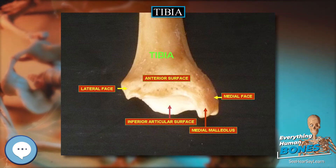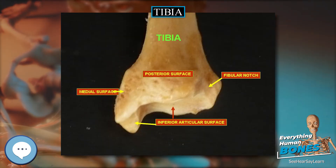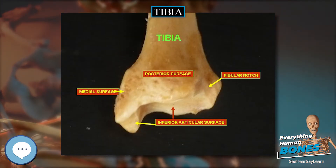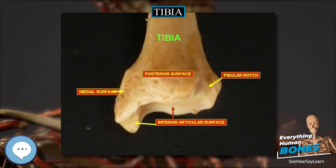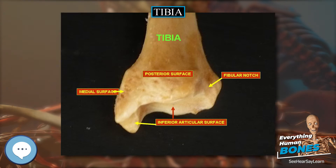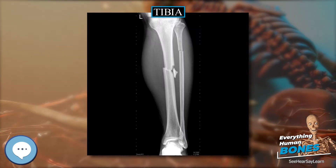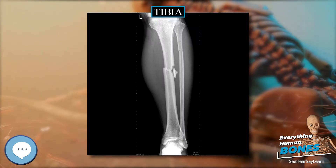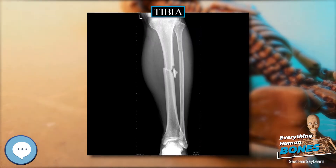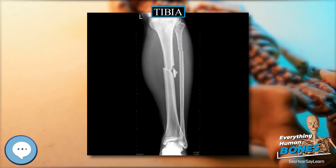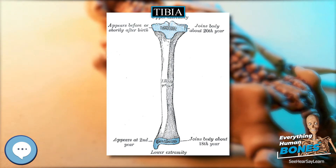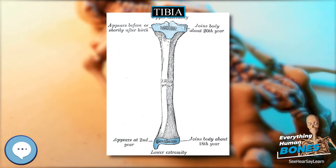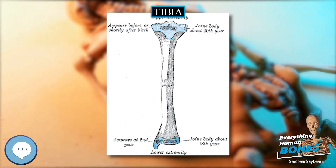Shaft. The shaft or body of the tibia is triangular in cross-section and forms three borders: an anterior, medial, and lateral or interosseous border. These three borders form three surfaces: the medial, lateral, and posterior.